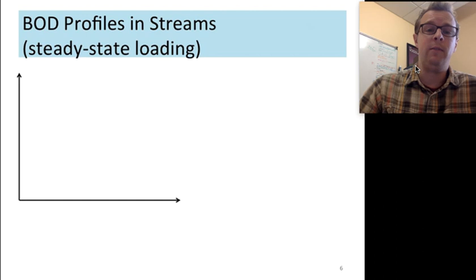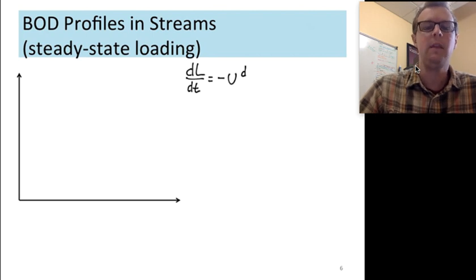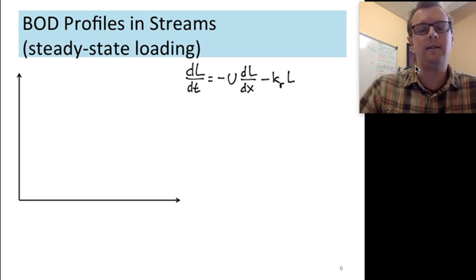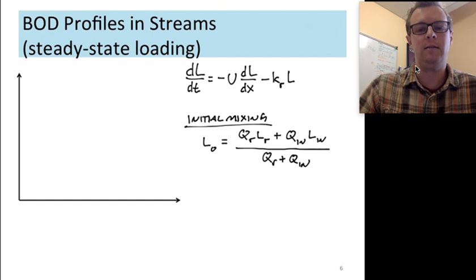So given something about a mass balance, I want to move beyond just a CSTR or a closed bottle and actually put this into a stream. And so we can take all of the same equations that we've used in the past. In this case, this is a description of BOD as a function of time and space in a plug flow reactor. So we've got advection and we've got a reaction term. Everything we used to do for initial mixing still applies. So you could do end member mixing of a river QR and a lateral input Q_in.